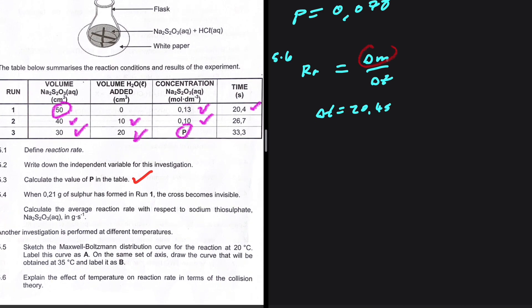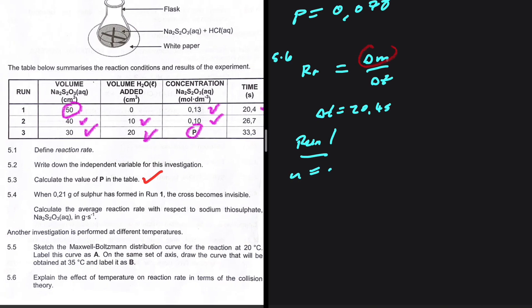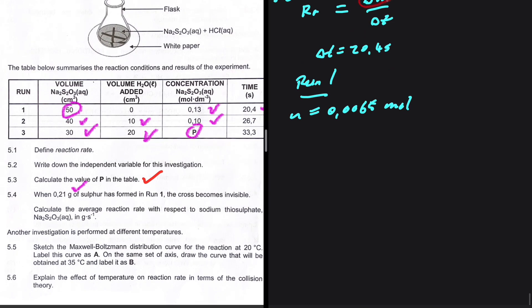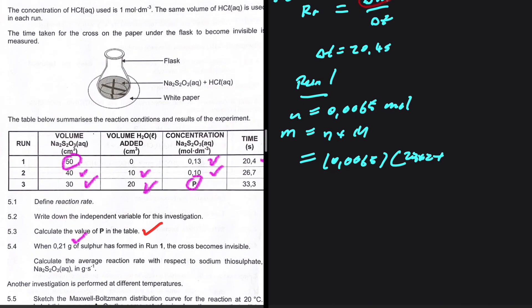We're looking for the change in mass. We know the number of moles we started with in run one — we calculated 0.0065 moles. To find the initial mass of sodium thiosulfate, mass equals number of moles multiplied by molar mass. The molar mass of Na₂S₂O₃ is: Na is 23 × 2, S is 32 × 2, O is 16 × 3.